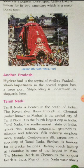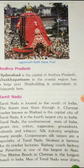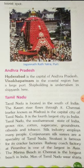Tamil Nadu, the southernmost state of India, grows rice, cotton, sugarcane, groundnuts, oilseeds and tobacco. Many people work in the silk industry. Kanjivaram silk sarees are a speciality of Tamil Nadu.